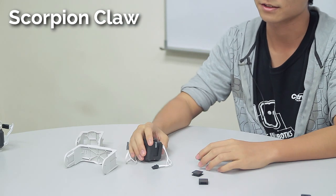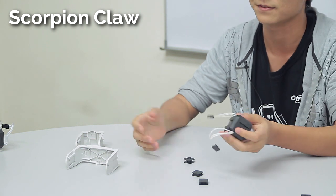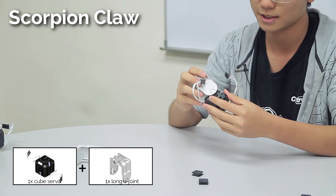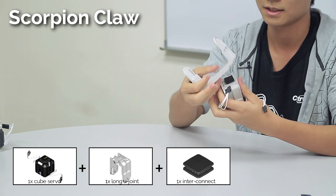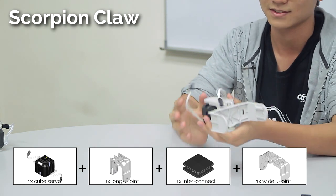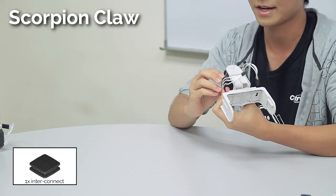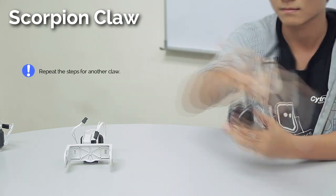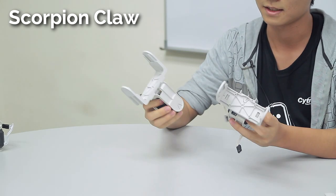Now we are going to build the claw. The claw is very, very simple. The sample claw. Of course, once again, you can modify. First, connect the cube servo to a long U-joint like this, and then use the interconnect to connect the long U-joint to the large U-joint. So this is the claw, very simple. Just slot in another interconnect. This is where it will go to the body. Then just duplicate this again, and thus we are done.